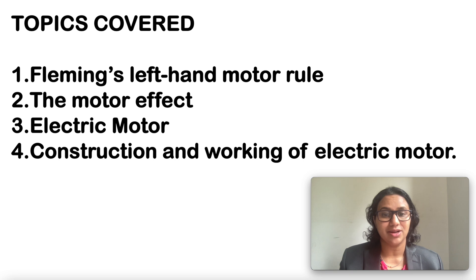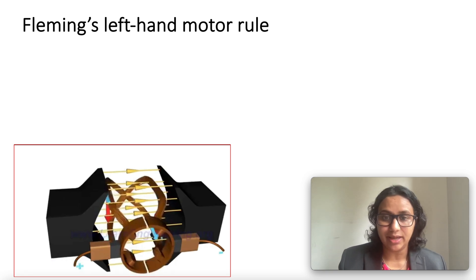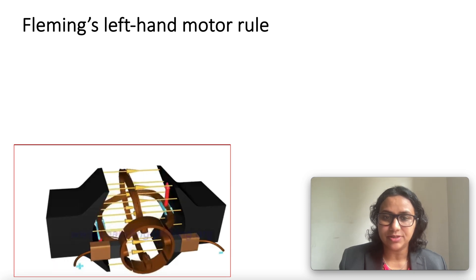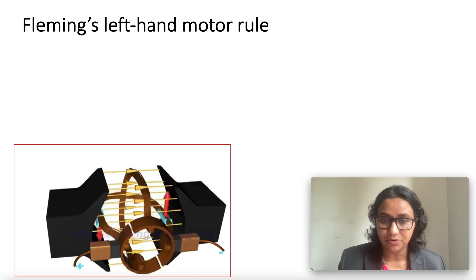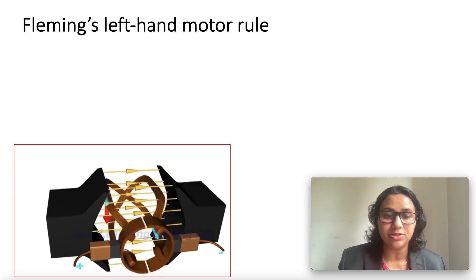Some experiments suggest that a force is exerted on the current-carrying rod when it is placed in a magnetic field. It also suggests that the direction of force is reversed when the direction of current through the conductor is reversed, or when you change the direction of the field to vertically downwards by interchanging the two poles of the magnet.